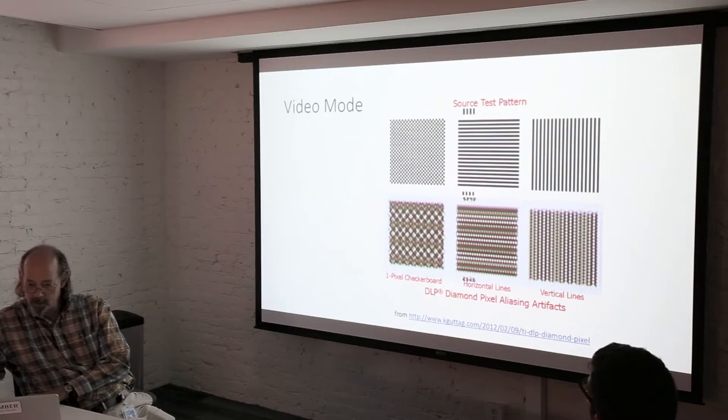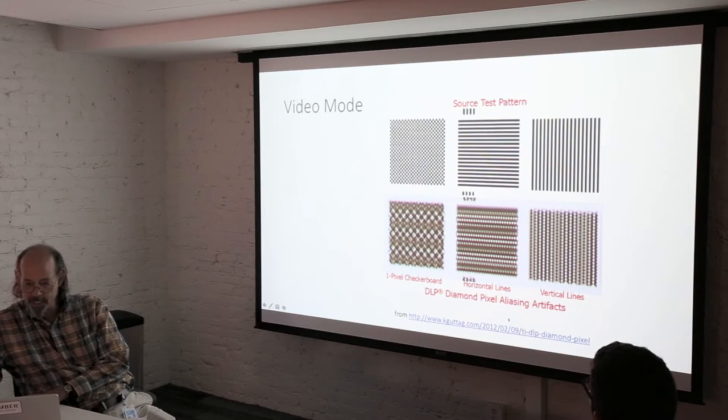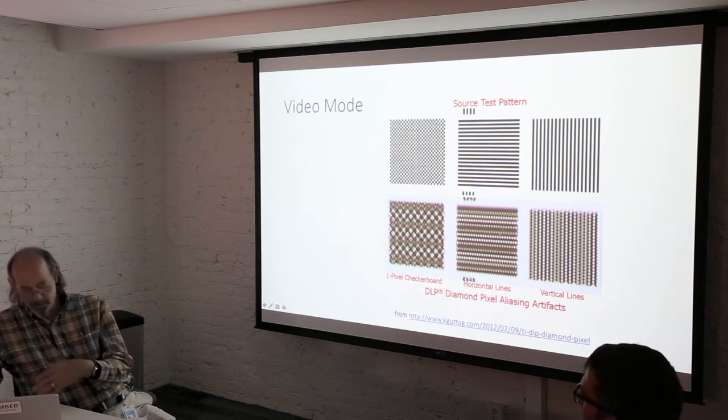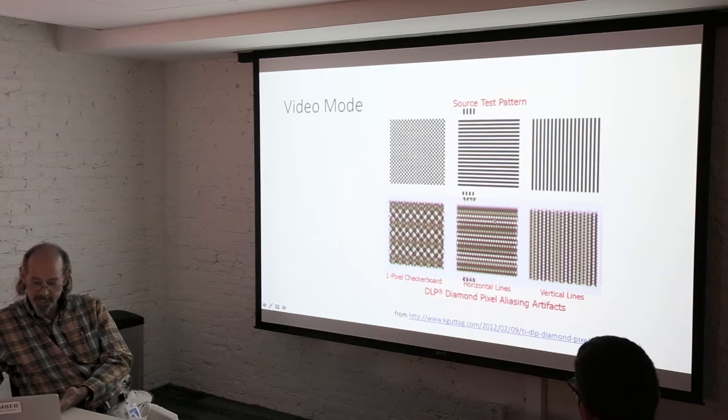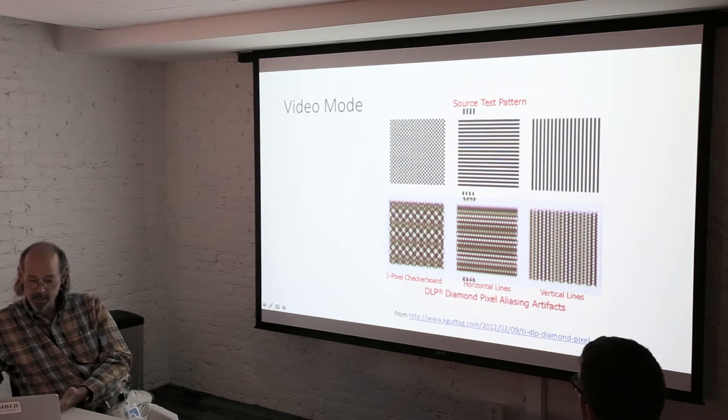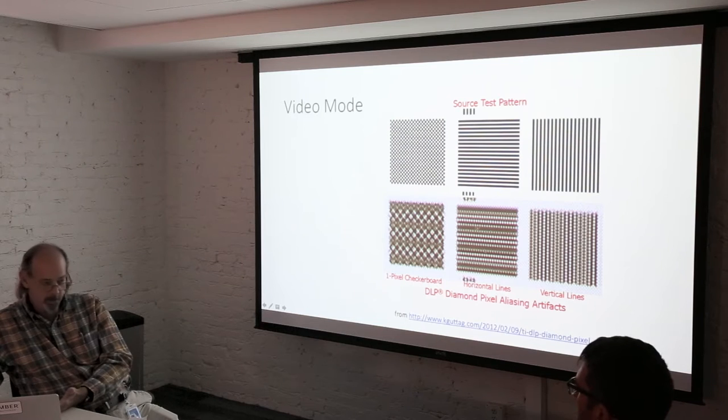So you can imagine if you had one white pixel surrounded by all black, the best that you could hope to get, once it's converted to the diamond orientation, would be a fairly bright pixel in the middle surrounded by a bunch of grays. And if you send it patterns like this, these come from a really good article by Carl Guttag, single pixel checkerboard or single pixel white and black alternating lines, you get these kinds of aliasing artifacts, or moire patterns, or beat patterns. You can see the actual intensity of a pixel is going to depend on just where it is within your image.